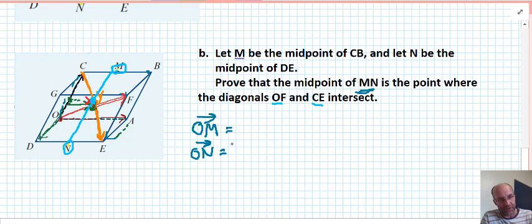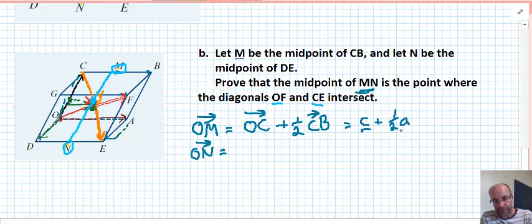We can define position vector OM by looking at OC plus half of CB. And based on the original vectors we defined in lowercase, that would be C plus half of A. You might need to scroll back or pause in order to see that. ON is OD plus half of DE. In terms of our lowercase vectors, we have D plus half of A.